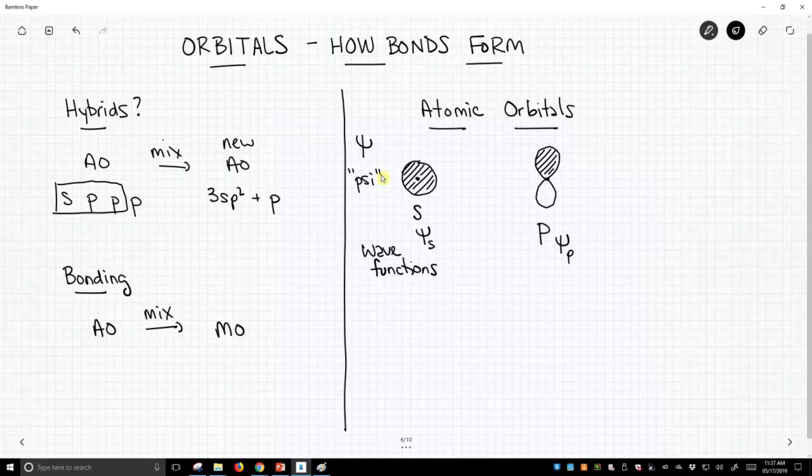So what can we do with wave functions, with mathematical functions? Well, these are what we use when we say we're mixing our orbitals. We're actually adding and subtracting these mathematical functions, and you can write stuff like the wave function of the s orbital plus the wave function of the p orbital equals a new psi of s plus p.